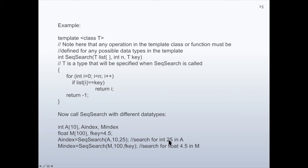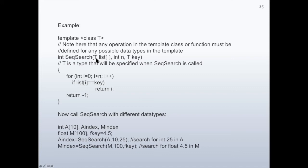In the next line, m_index is assigned the return value of sequential search on array 'm', which is a floating number array having 100 entries. We are looking for f_key, which was set to 4.5. So we search for float 4.5 in 'm'. By this call, the type of T is floating number, and floating numbers are to be stored in the array list.